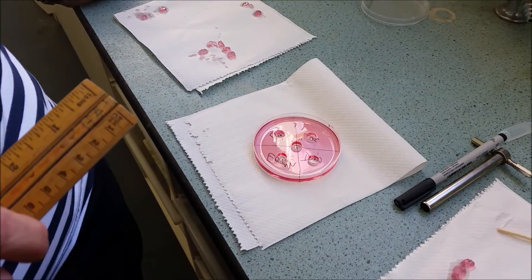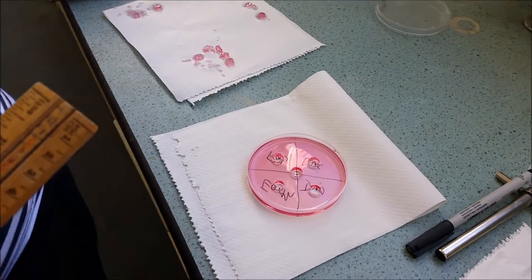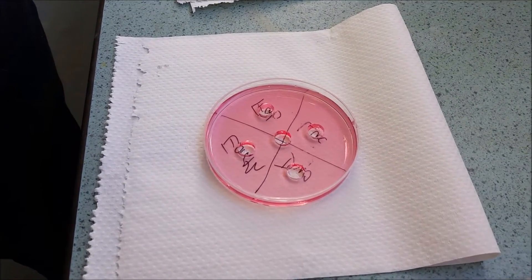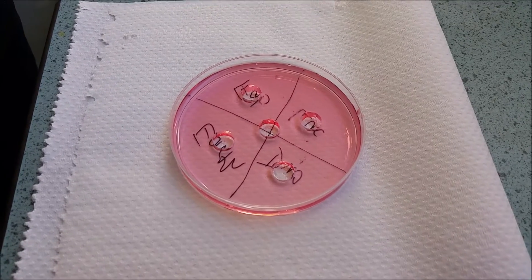Once the holes have been drilled, the wells have been created and before you put your laundry detergent in it's really important to remember to measure each of the wells using a ruler.